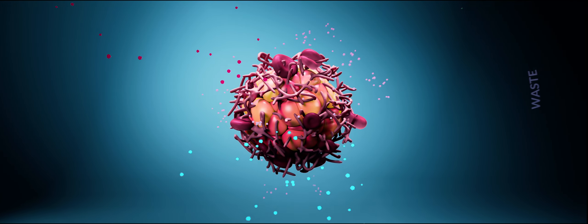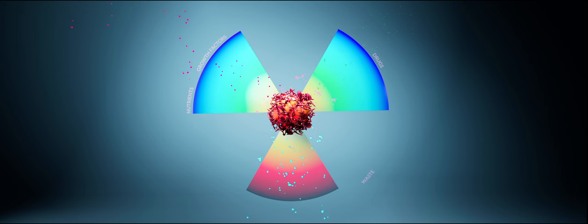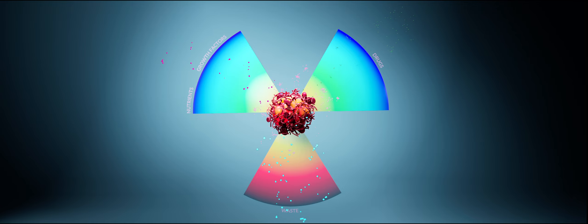In static cultures, nutrient supply and waste removal is by diffusion. This results in large and irreproducible gradients outside and within the spheroids. It is also nearly impossible to deliver drugs in a uniform and reproducible manner in static culture systems.